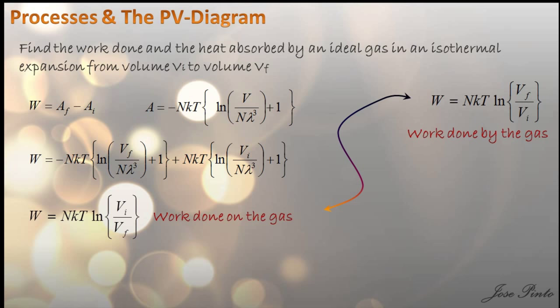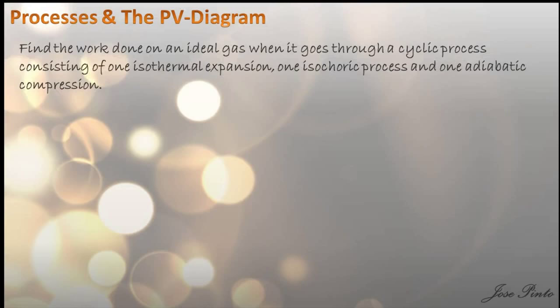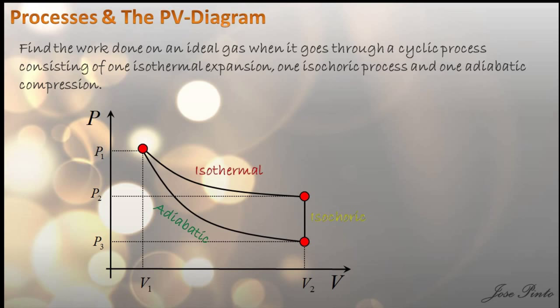Next problem: let's find the work done in a cyclic process consisting of an isothermal expansion, an isochoric process, and an adiabatic compression. You can break down any cycle into pieces, and each of these pieces will have different properties. Depending on the process, some parts of the cycle will be reversible and some will not. Adiabatic processes are reversible because there is no exchange of heat with the environment, provided that the external pressure is very close to the pressure of the gas — in other words, if the process is quasi-static.